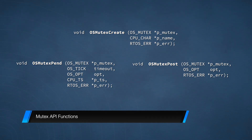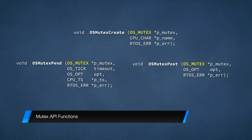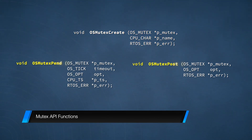The first difference involves data types. Semaphores are implemented using a data structure of type OSSem. With mutexes, the concept is the same, but the data structure is a different type: OSMutex. For each mutex you create in your application, you must declare an OSMutex structure, and then you must initialize the structure using OSMutexCreate. Likewise, when you invoke OSMutexPend or OSMutexPost, you provide a reference to the initialized OSMutex structure.